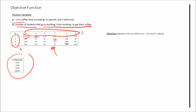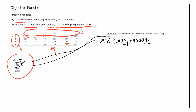Let's write down the objective function: minimize. The first component is fixed cost. Fixed cost for building 1 is 5,000, so we write 5,000 y1. We multiply by y1 because if we locate a coffee shop in building 1, y1 becomes 1 and we pay 5,000; if we don't, y1 is 0 and the product is 0. Same idea for the others: 7,500 y2, 9,000 y3, and 10,000 y4. This completes the fixed cost component of the objective function.